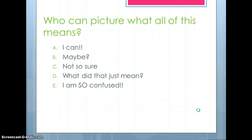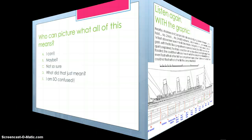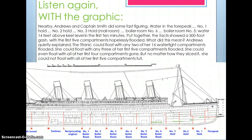So who can picture what all of this means? Are you an A — I can picture it — a B — maybe — a C — not so sure — a D — what does that mean — or E — I am so confused? If you're confused, that's okay. I would expect it. That's what we have graphics for. So listen again to the part about all the different pieces of the ship. Watch the graphic — really pay attention, and I'll try to point it out.